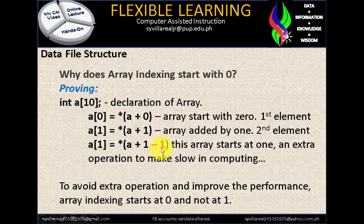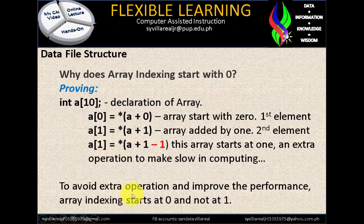That extra minus 1 operation has been proven by scientists to slow down computation and computer memory. That's why it's been removed and we start with zero. It is possible to use index starting at 1 and it is correct, but there is no efficient algorithm — it makes your solution slower. To avoid extra operations and improve performance, array indexing starts at zero and not at one.